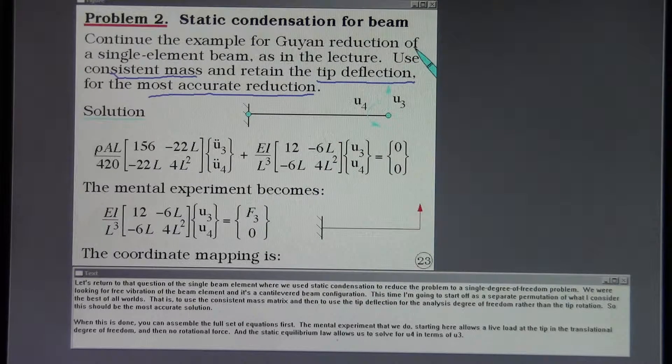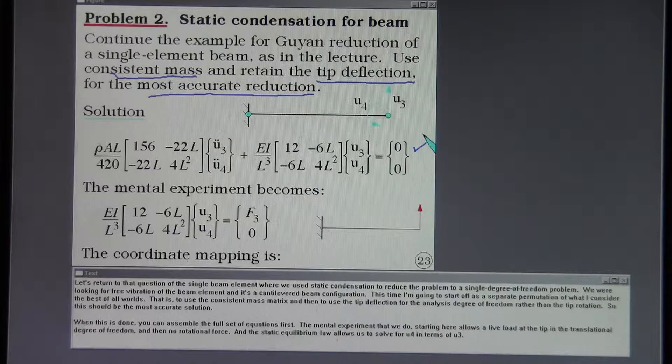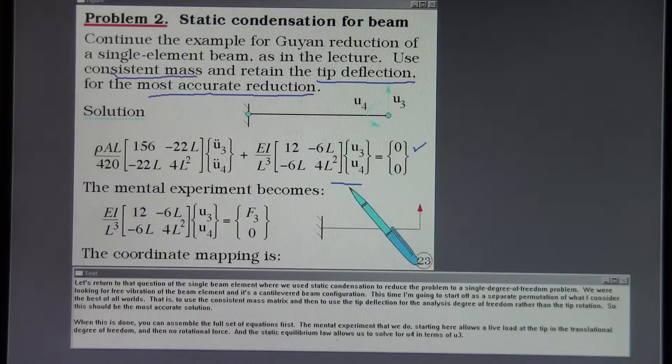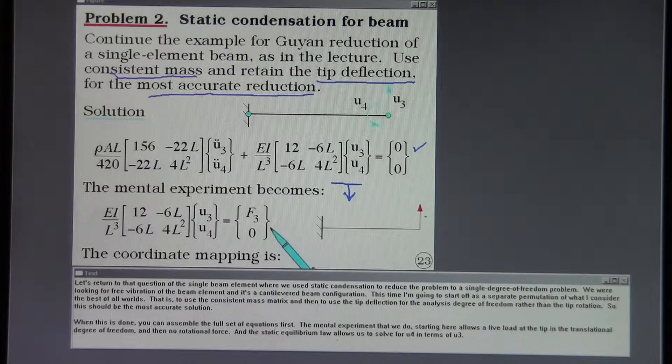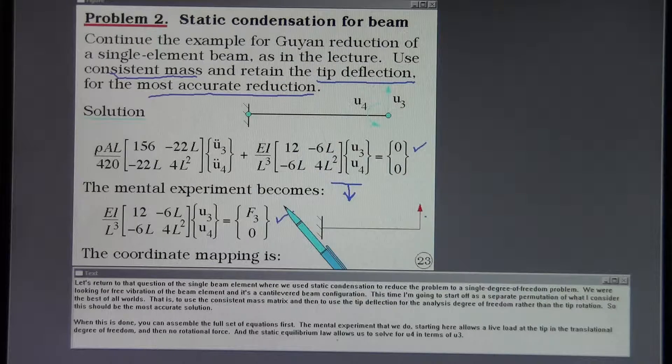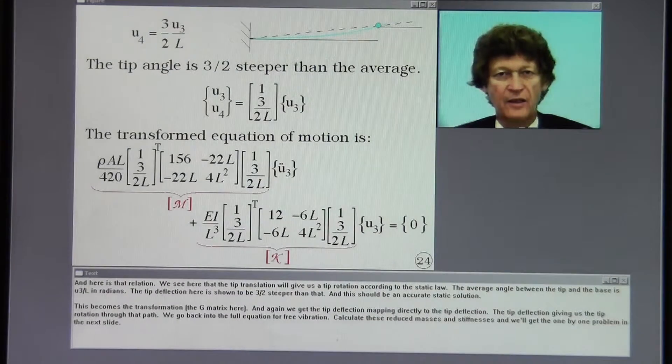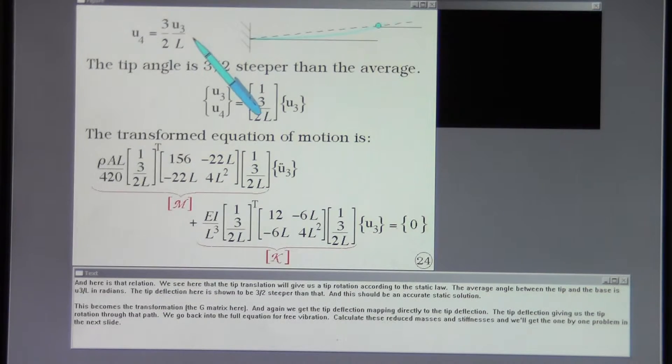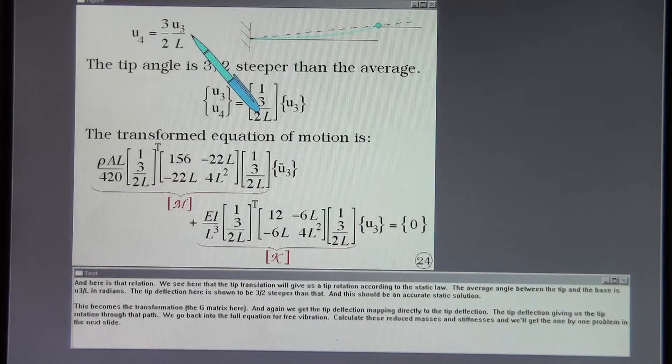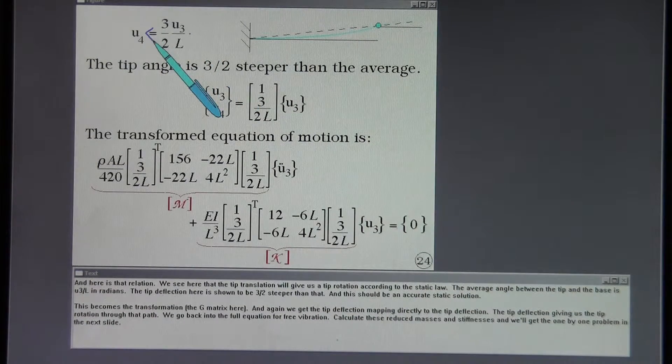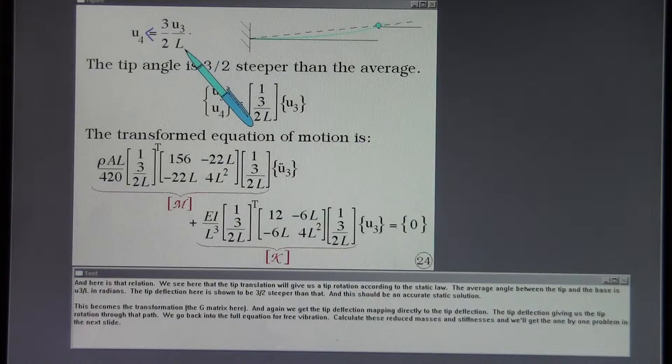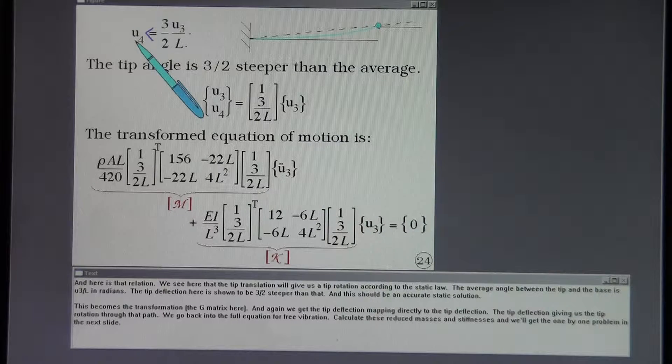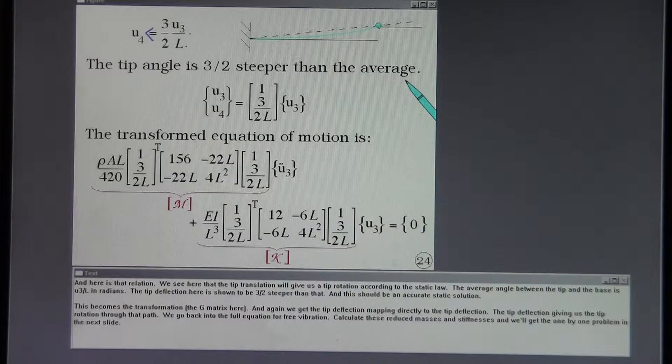When this is done you can assemble the full set of equations first. The mental experiment that we do starting here allows a live load at the tip in the translational degree of freedom and then no rotational force. And the static equilibrium law allows us to solve for U4 in terms of U3. And here is that relation. We see here that the tip translation will give us a tip rotation according to the static law. The average angle between the tip and the base is U3 over L in radians. The tip deflection here is shown to be 3 halves steeper than that. And this should be an accurate static solution.